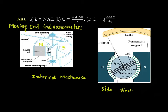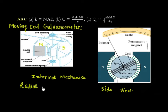These magnets are used to produce a radial magnetic field. If you see this diagram, this is the north pole on this side, and the south pole on the other side. The magnetic field lines are radial. So we have radial magnetic field lines — that is important. It is also a uniform magnetic field.